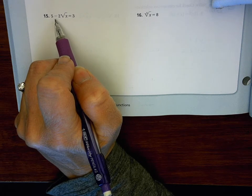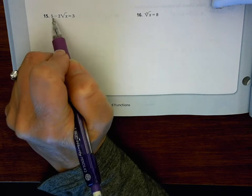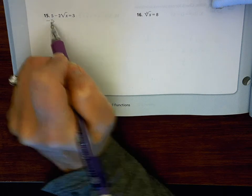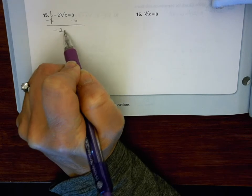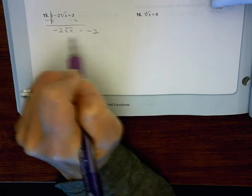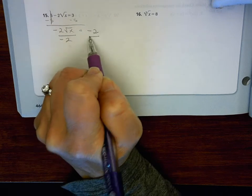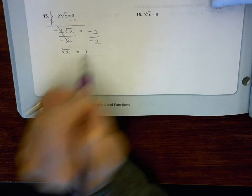So the first thing I want to do is I want to subtract 5 because this is a positive 5. So that's 0. And then 3 minus 5 is negative 2. And then divide both sides by negative 2. And then that is positive 1.